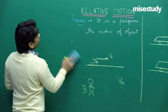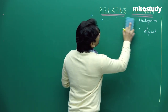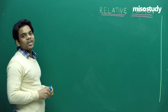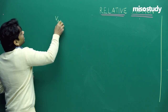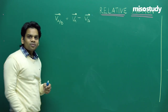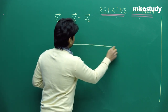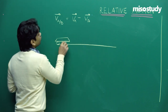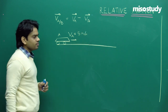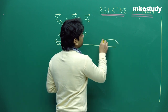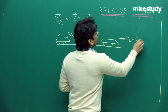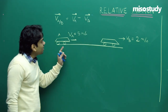Remember this basic equation: velocity of A with respect to B is given as velocity of A minus velocity of B. Let us do an example for better understanding. Two cars are moving in the same direction — car A moving towards the right with a velocity of 5 m/s, and car B also moving towards the right with a velocity of 2 m/s.